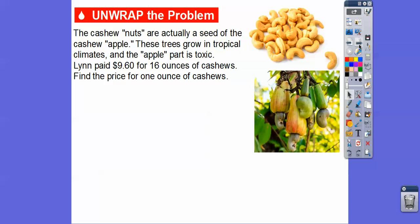So cashew nuts — it's actually not a nut, they're actually a seed from the cashew apple. Here's the cashew apple right here. These cashew nuts that you see in the stores are these little seeds underneath. This apple part is actually the toxic part, and it grows in tropical climates like Brazil, somewhere where there's a lot of rain and the temperature is warm.